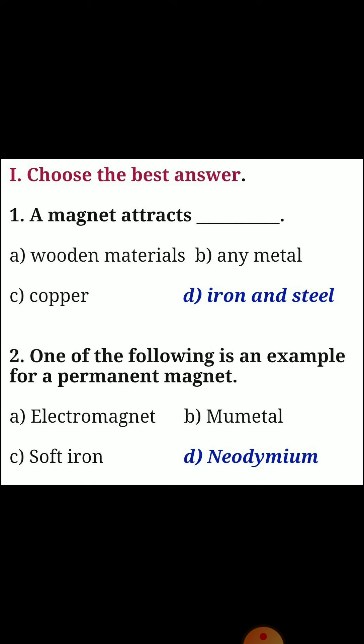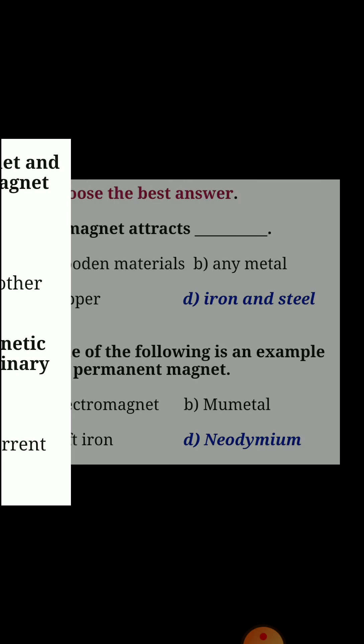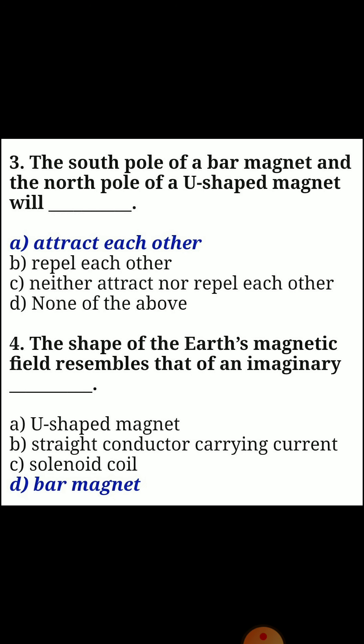Second one: which of the following is an example of a permanent magnet? Answer D: neodymium. Third one: the south pole of a bar magnet and the north pole of a U-shaped magnet will — answer A: attract each other.